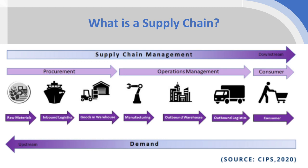These raw materials move down a set of activities, usually in different locations and also with many different companies involved, until they're processed into refined forms, assembled together, and bottled into the actual can itself — then moving across a different set of activities, different warehouses, different logistics networks.